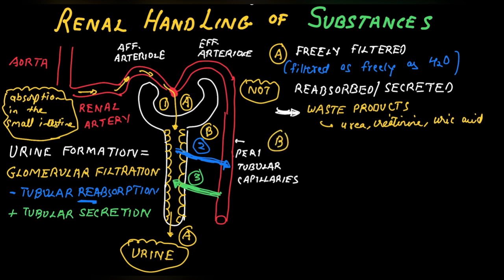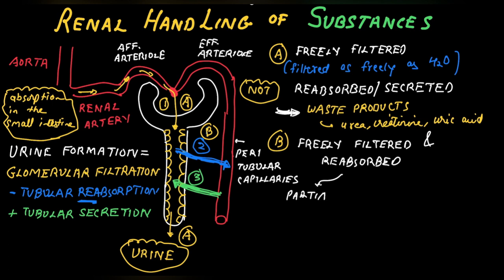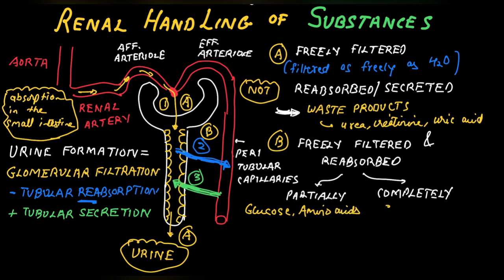Finally, there is a large group of substances which are freely filtered — filtered as freely as water — but they also pass from the tubular lumen across the epithelial cell into the peritubular capillaries, so they are reabsorbed. This reabsorption may be partial, such as for electrolytes like sodium and potassium, or complete, meaning all filtered substance is reabsorbed, as for glucose and amino acids.